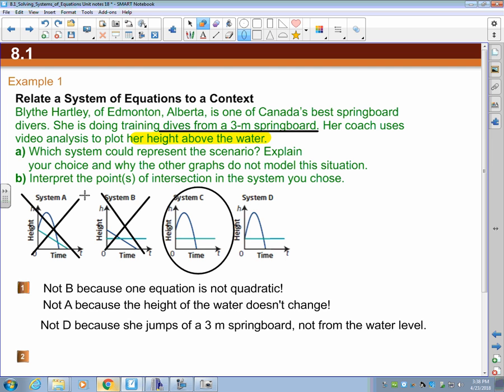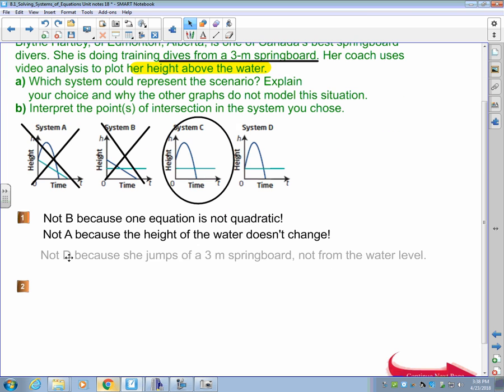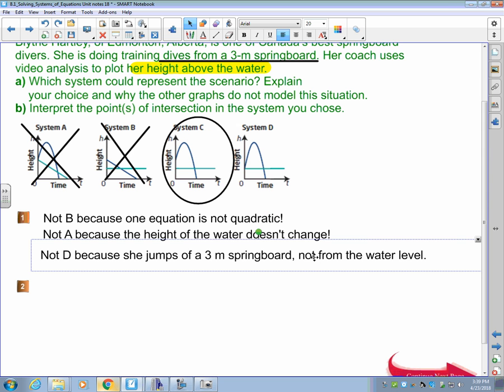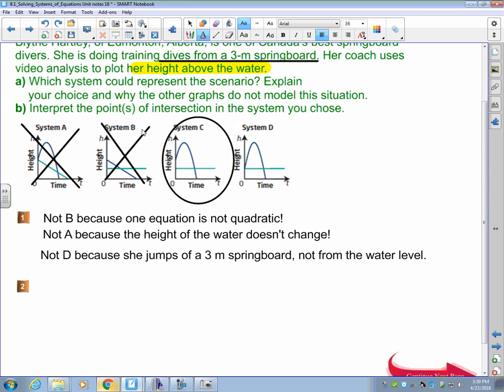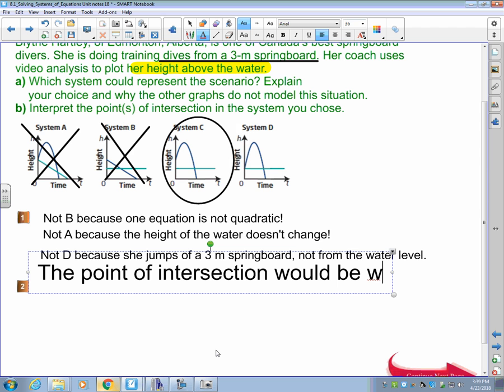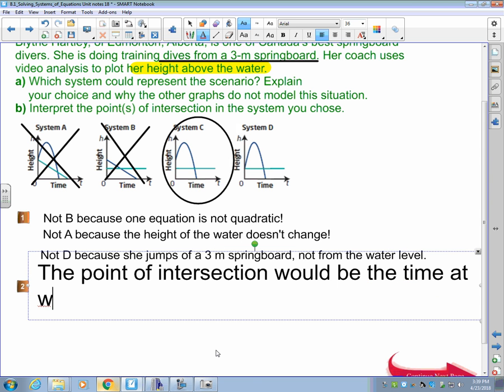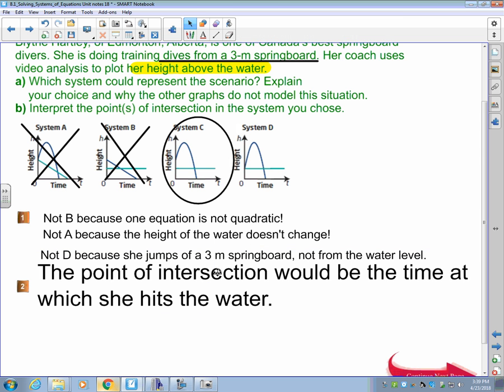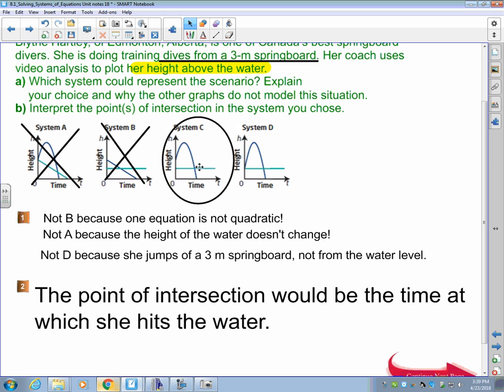And in this case, we have one point of intersection. The point of intersection would be the time at which she hits the water. We can't read what it is, but we can take an estimate for it. It would be right there. That's the time where she hits the water. So that's the idea of solving graphically.